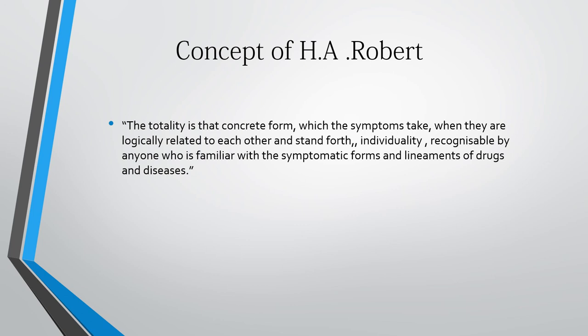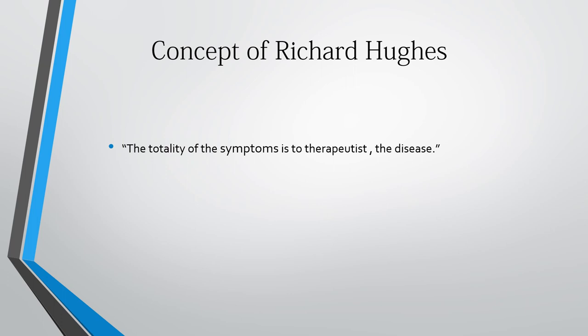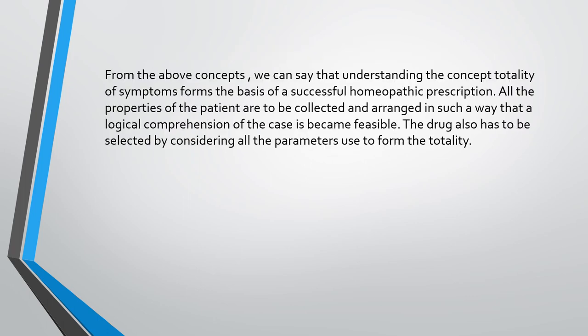According to Richard Hughes, the totality of symptoms is to therapeutics what the disease is. From all the above concepts, we can say that understanding the totality of symptoms forms the basis of successful homeopathic prescription. All the properties of the patient are to be collected and arranged in such a way that a logical comprehension of the case becomes feasible. The drug must also be selected by considering all the parameters used to form the totality.